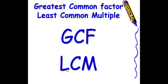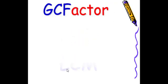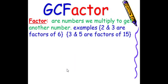The greatest common factor and least common multiple, the GCF and the LCM. A factor are numbers we multiply to get another number. For example, 2 and 3 are factors of 6 because 2 times 3 is 6. 3 and 5 are factors of 15 because 3 times 5 is equal to 15.